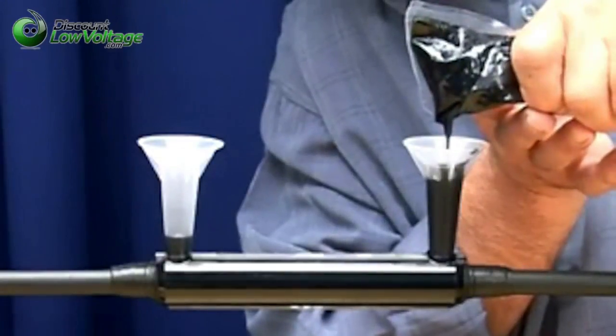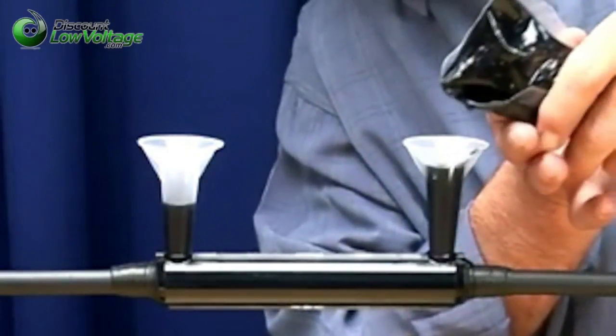Splice cure time is 1.5 hours and is submersible in 4 hours. Clip off the spouts if desired. Your 82A1 power cable splice is now complete.